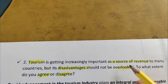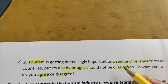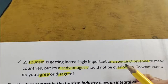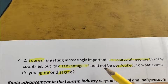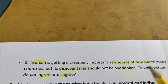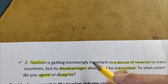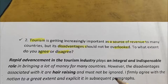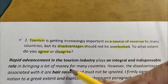Tourism is getting increasingly important as a source of revenue to many countries, but its disadvantages should not be overlooked — 'should not be overlooked' means should not be ignored. I always advise my students to spend some time before you start writing to understand your topic properly. And this is my introduction: 'Rapid advancement in tourism industry plays an integral and indispensable role in bringing a lot of money for many countries.' I have rephrased the statement. 'Rapid advancement' means tourism industry is developing very fast. 'Integral and indispensable role' means very important, significant, or absolutely essential.